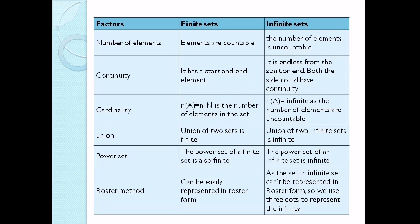To summarize our lesson, here is a comparison in tabular form. For the number of elements: finite sets are countable, infinite sets are uncountable. For continuity: finite sets have a start and an ending element — for example, starting at 1 and ending at 5. Infinite sets are endless from start or end; both sides could have continuity, for example …1, 2, 3, 4, 5… continuing lower than 1 or higher than 5. For cardinality: finite sets have a defined cardinality; infinite sets do not, because elements are unlimited.